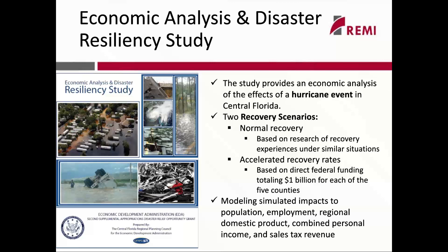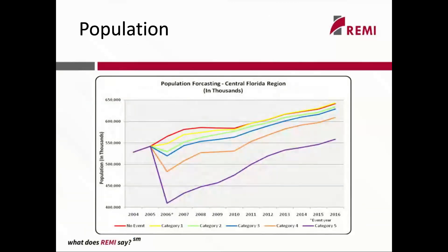In this simulation, they looked at population, employment, regional domestic product, combined personal income, and sales tax revenue. This graph shows population trends from that study after the different categories of storms. The red line is the projected population trend with no event, and the rest of the lines are forecasted population trends after a category one through five event. This graph shows the trajectory in the accelerated recovery scenario. After a category one scenario, the accelerated rate of recovery — the one that includes $1 billion of increased funding — gets population back to the no-event forecast within five years.